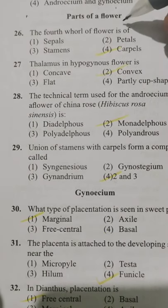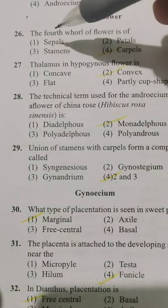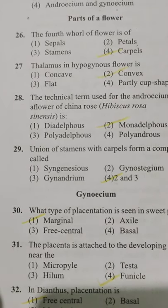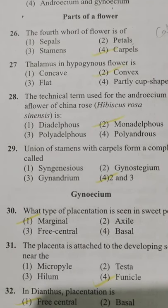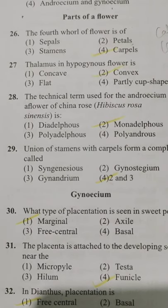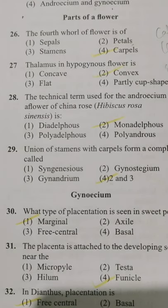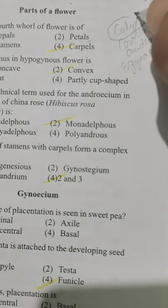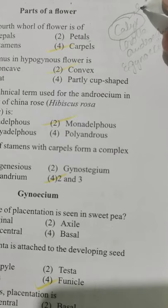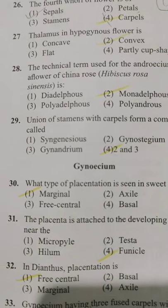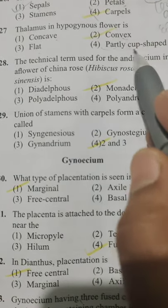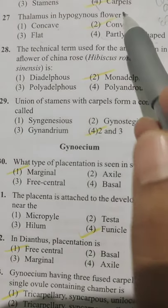The outermost whorl of a flower is — Option 1 sepals, Option 2 petals, Option 3 stamens, Option 4 carpels. The outermost whorl is the calyx, whose individual units are called sepals. So Option 1. Next: the thalamus in a hypogynous flower is — Option 1 concave, Option 2 convex, Option 3 flat, Option 4 partly cup-shaped. The answer is Option 2, convex.